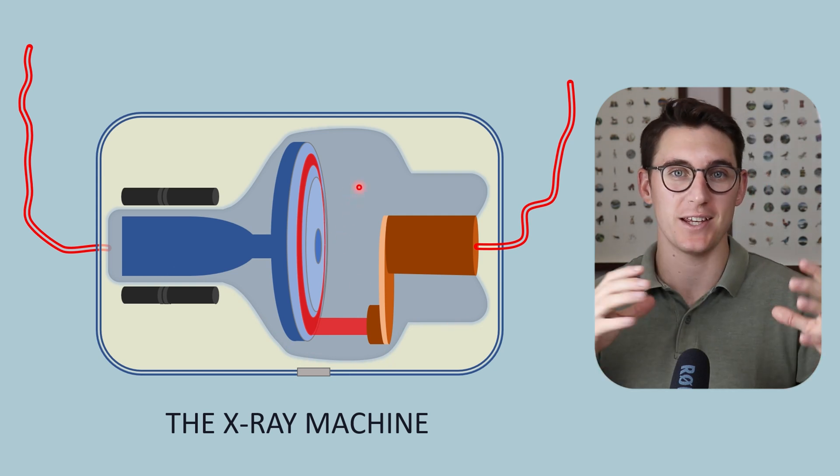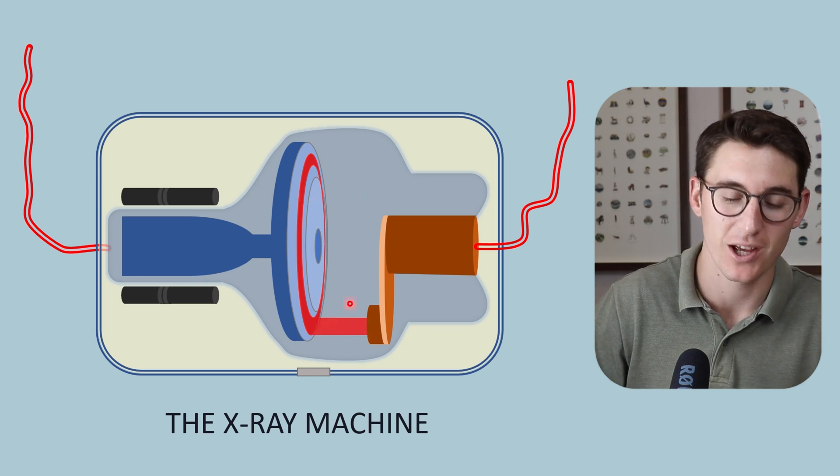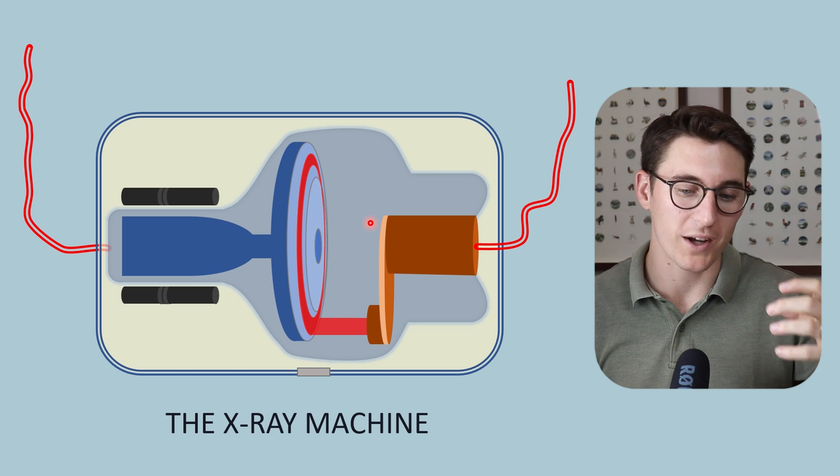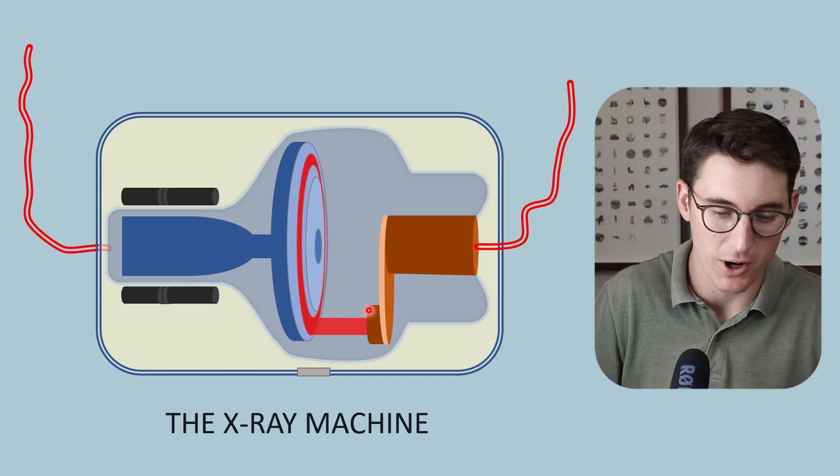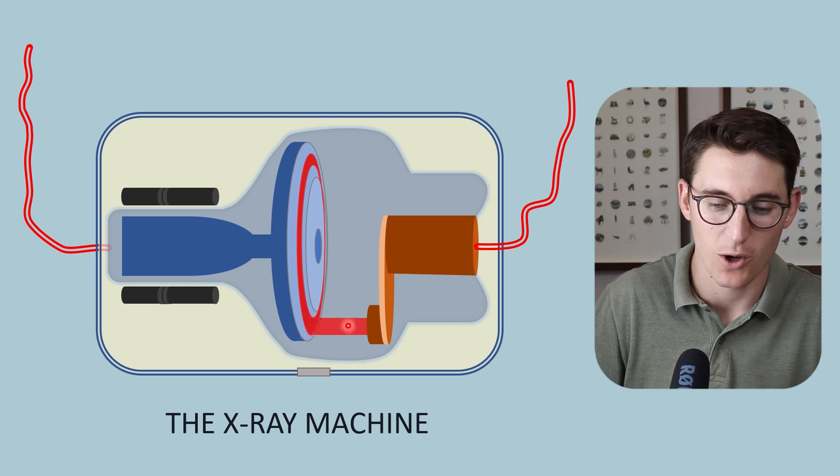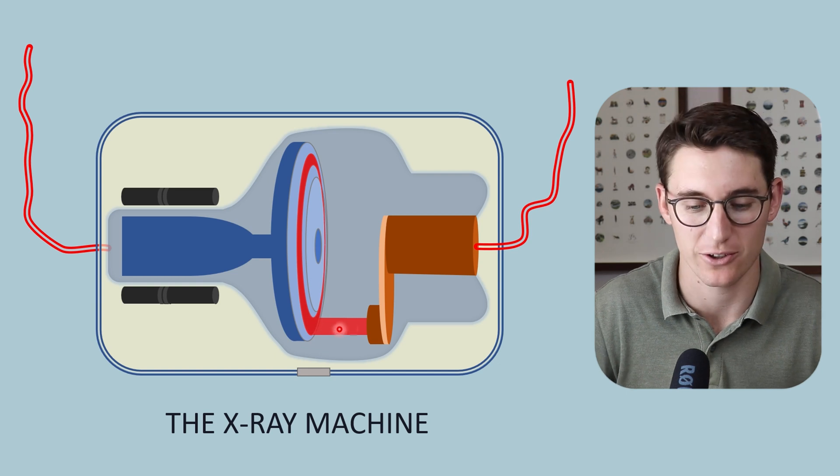There is no air within this glass envelope, and that allows our electrons to pass towards our anode unobstructed. We don't want those electrons to interact with any other atoms or molecules prior to striking the anode. We want all of that energy to be deposited into our actual focal spot on the anode.